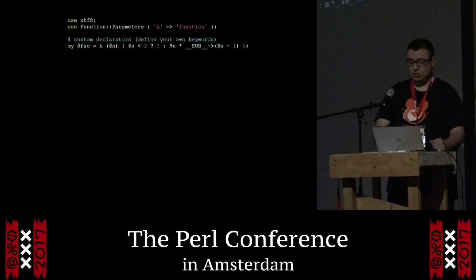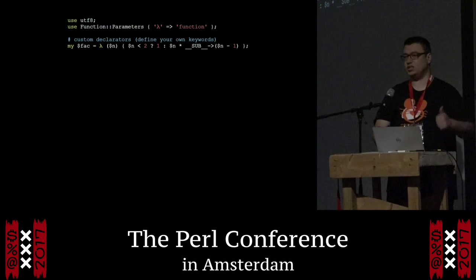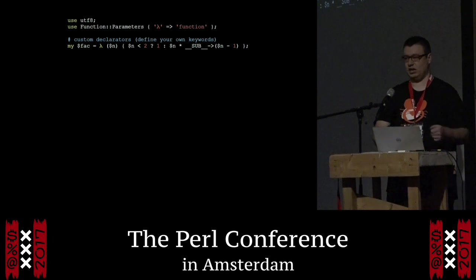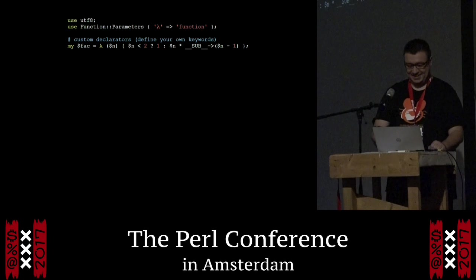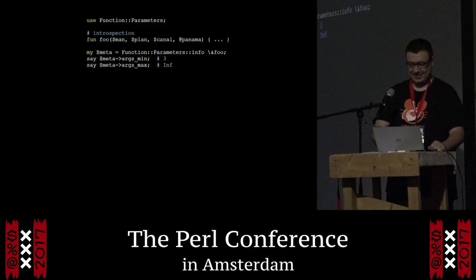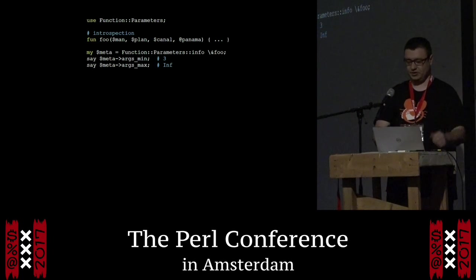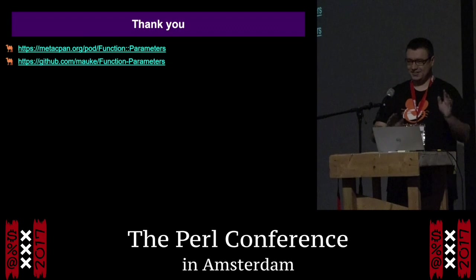If you're feeling adventurous, you can redefine the way the keywords work. You can provide your own keywords if you want to define functions not with 'fun' or 'method' — you can say you want 'def', 'proc', or an actual Greek lambda, and this actually works. You can also configure it to not allow names, so you have to use lambda for anonymous functions. There's also introspection — you can ask Function::Parameters various things about the functions it knows. It gives you an object with various information in there. You should take a look at this. Thank you.